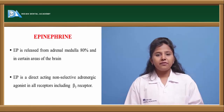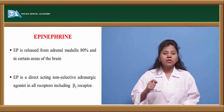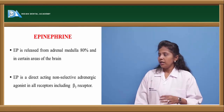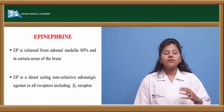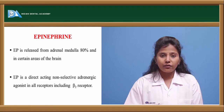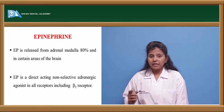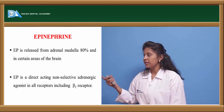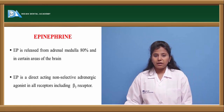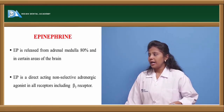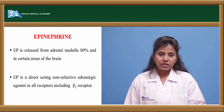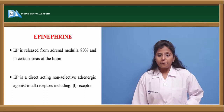The next drug is epinephrine, which is also a directly acting non-selective adrenergic agonist that binds to various adrenoreceptors. Epinephrine is released from the adrenal medulla and brain (medulla oblongata). About 80% of release is from the adrenal medulla and brain, and the remaining 20% from other parts of the body. Unlike norepinephrine, epinephrine also acts on beta-2 receptors.